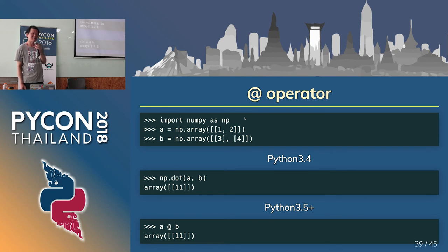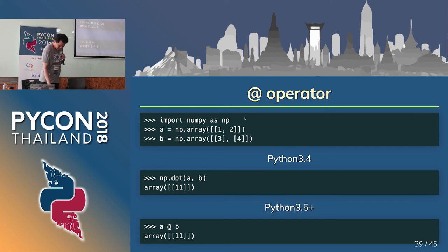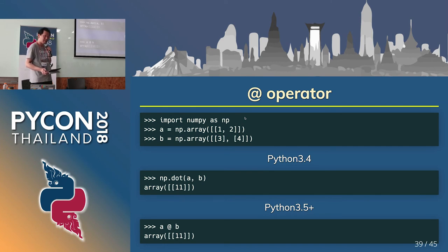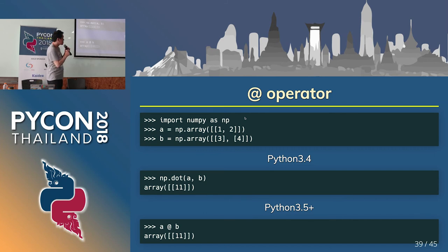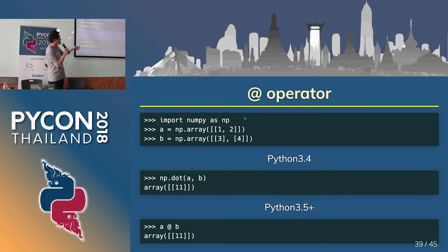Next topic: the at-mark operator. If you want to get a dot product for NumPy arrays, you can use the at-mark operator. The top and bottom examples have the same meaning.